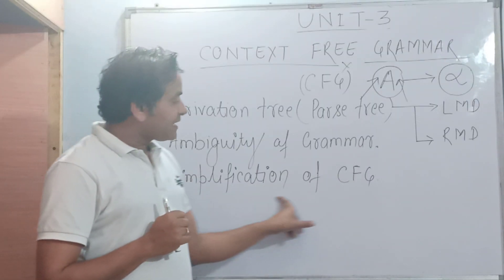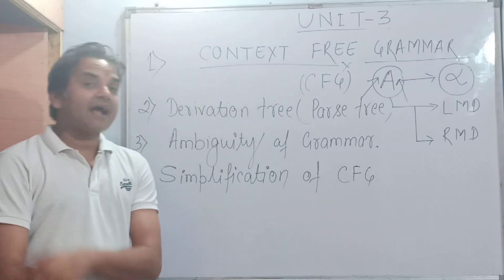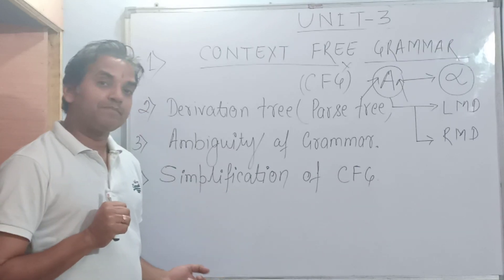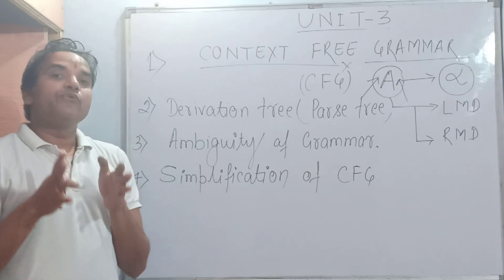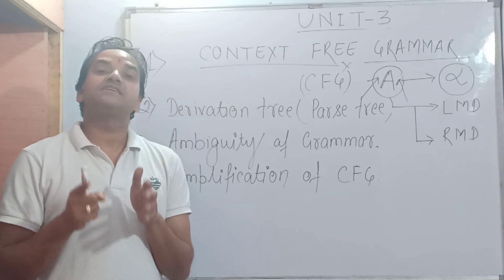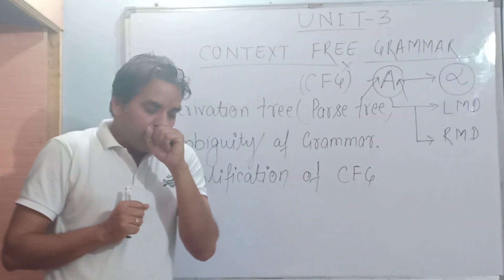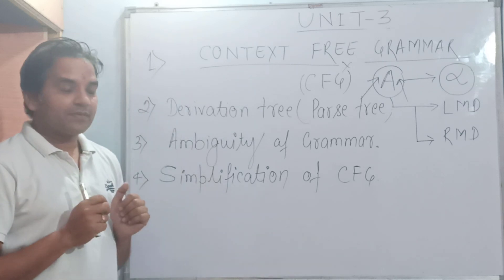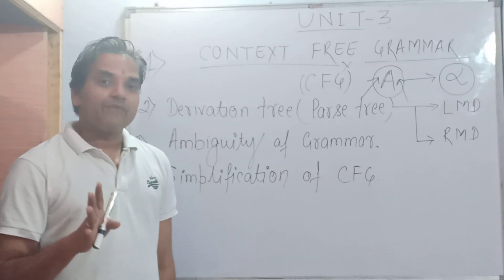The fourth topic is simplification of CFG. This topic is important and contains four theorems. The first theorem is elimination of those symbols which do not derive a terminal. The second theorem is elimination of symbols which are not in sentential form. The third theorem is elimination of null production, and the fourth theorem is elimination of unit production.